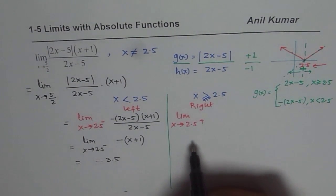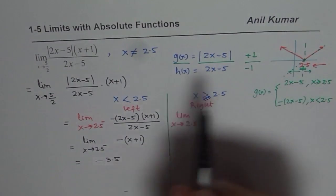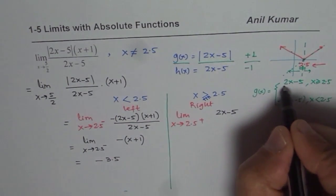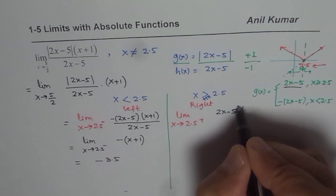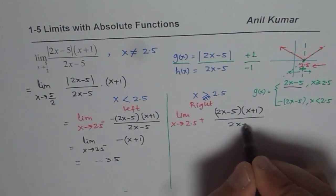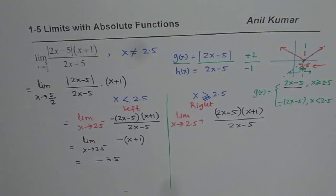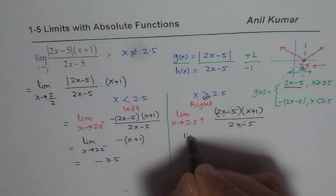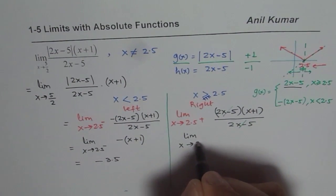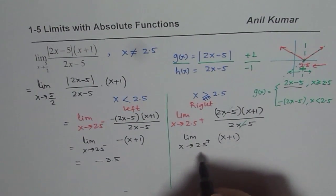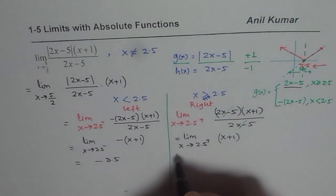Now let us calculate the limit from the right side. When working on the right side, absolute value of 2x minus 5 is written as 2x minus 5. So we have the limit as x approaches 2.5 from the positive side of: (2x minus 5) times (x plus 1), divided by (2x minus 5). Both factors of 2x minus 5 cancel, giving us simply x plus 1. Substituting 2.5 gives us positive 3.5.